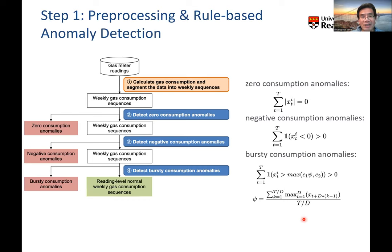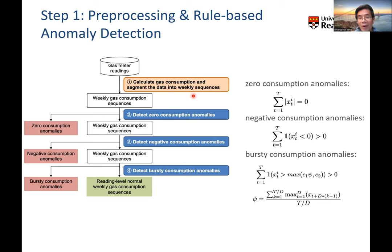Now we introduce each step. First, preprocessing and rule-based anomaly detection consists of four stages. The first is to calculate gas consumption and segment the data into weekly sequences. The real-time data collected from users is accumulated total consumption, so we find the difference between previous and current readings to get the consumption at each individual moment. We also segment the data into weekly sequences since patterns are weekly.